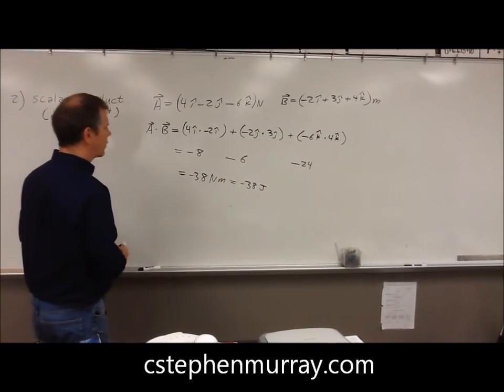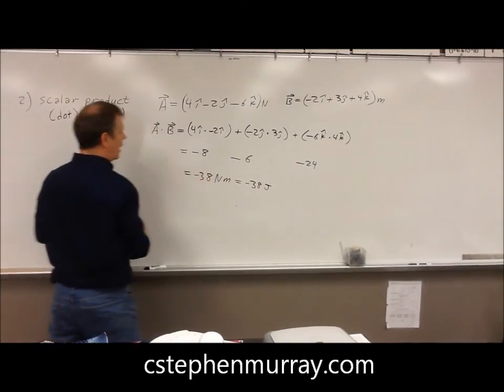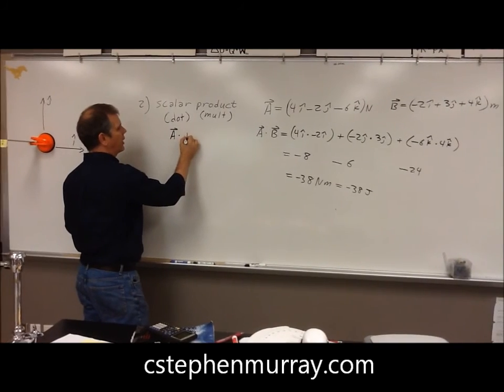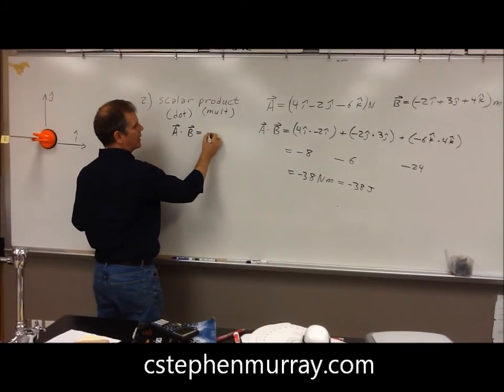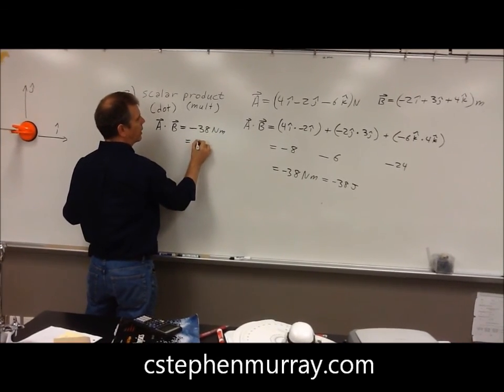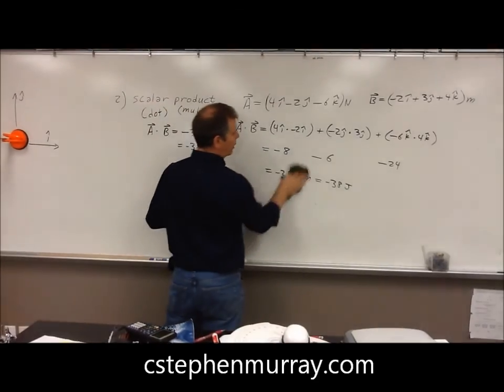We're going to keep this number. Again, notice the i's, j's, and k's all disappear. I'm going to keep this over here and show that a dot b gave me negative 38 newton meters, or negative 38 joules, because now we're going to do cross product.